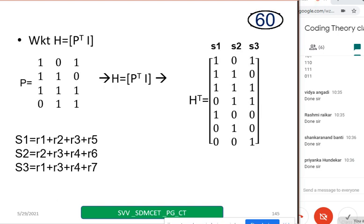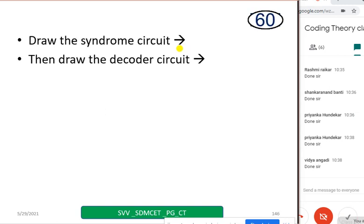Now, all of you copy down the H transpose. P is already known to you. Write down the H transpose. Write down the S1, S2, S3. Then we will go for a syndrome circuit. I will wait for one minute. Once if you write the H transpose, draw the syndrome circuit.